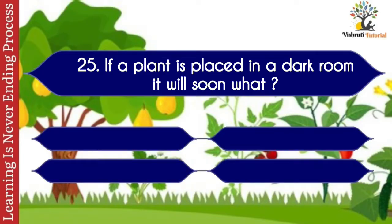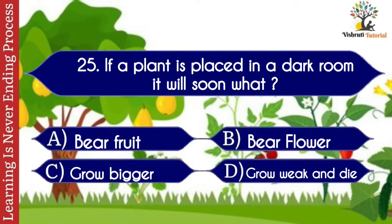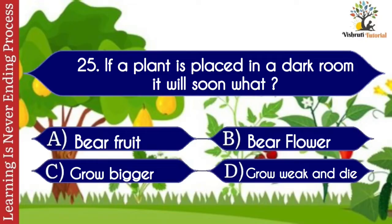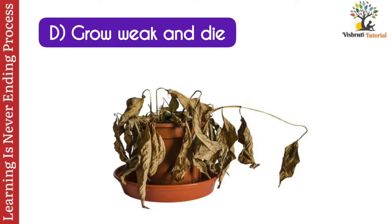Question number twenty-five: if a plant is placed in a dark room, it will soon do what? Options: A. Bear fruit, B. Bear flower, C. Grow bigger, D. Grow weak and die. The correct answer is D. Grow weak and die. If we place a plant in a dark room, it will grow weak and die.